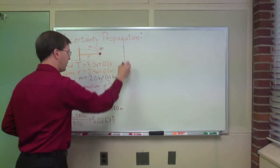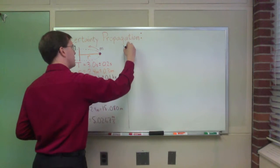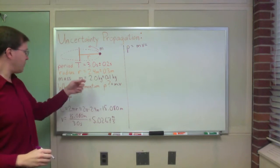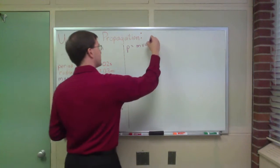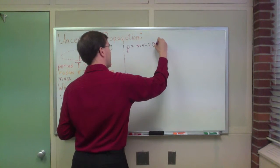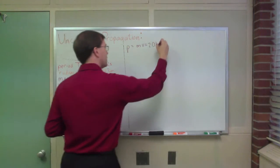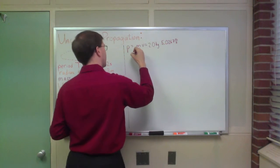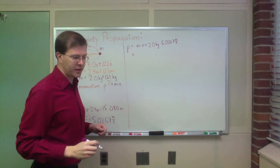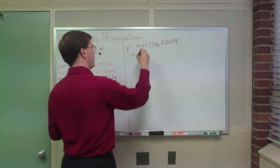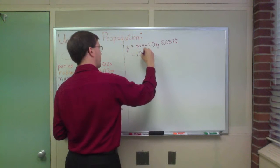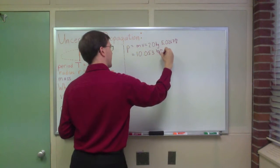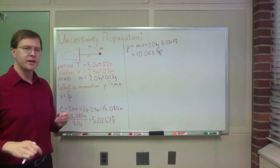And then finally, my momentum is equal to mv, mass times the speed. And my mass is 2 kilograms, that's 2.0 kilograms times my speed, 5.0267 meters per second. The number I come up with for momentum, then, is 10.053 kilogram meters per second. Okay, that's the calculation that I've done.